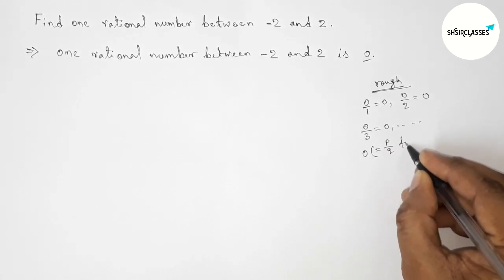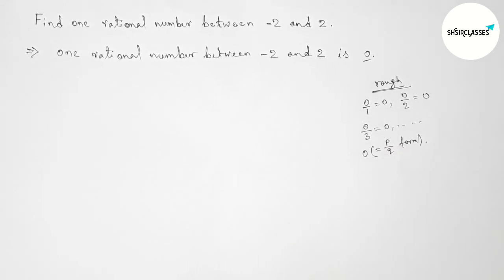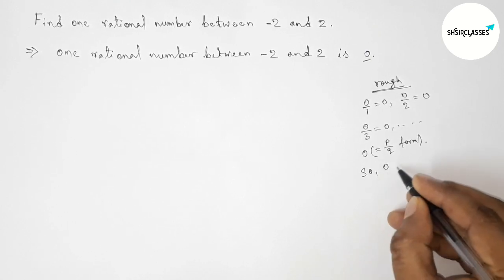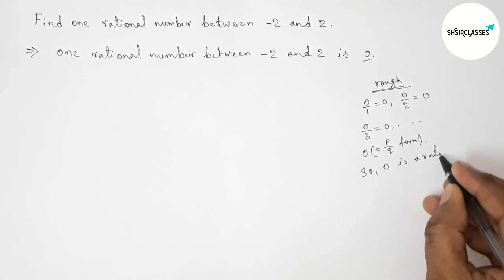in p by q form, where p and q are integers and q is never 0. So obviously, 0 is a rational number.